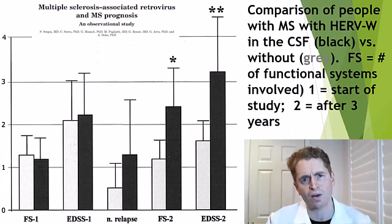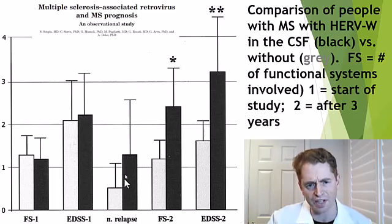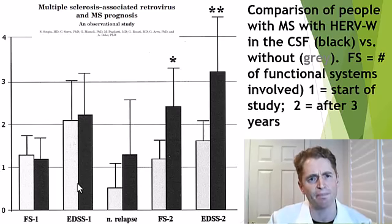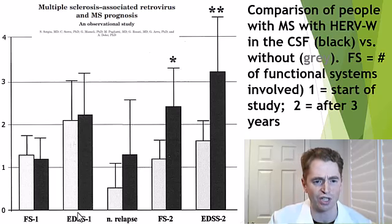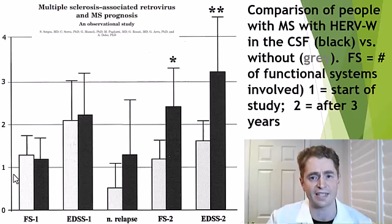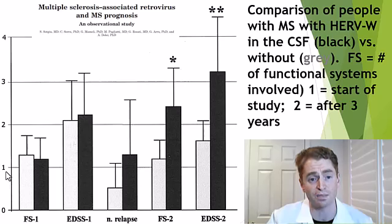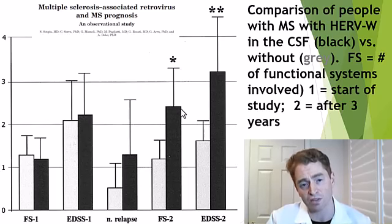This is a study of people with MS with or without HERV-W in the cerebrospinal fluid — those with HERV-W labeled in black versus without in light gray. There was a trend towards more relapses in the group with the virus. Looking at the Expanded Disability Status Scale — EDSS — at the beginning and end of the study, there was some improvement in disability in people without the virus, but worsening in people with the virus. They also looked at functional system scores for visual, sensory, and motor systems, and again there's a trend toward people with HERV-W in the CSF getting worse relative to those without.